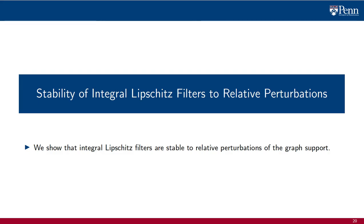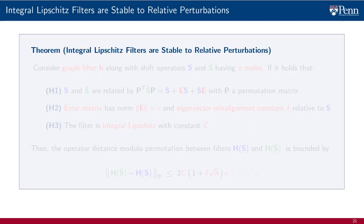We prove stability of integral Lipschitz filters to relative perturbations of the graphs. The use of integral Lipschitz filters engenders the usual discriminability challenges. Having introduced a model of relative perturbations — a way of measuring perturbations of shift operators in a relative sense — we can state a theorem declaring the stability of integral Lipschitz filters to relative perturbations.